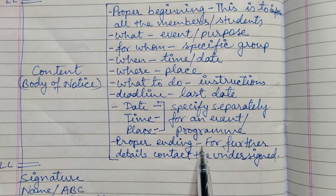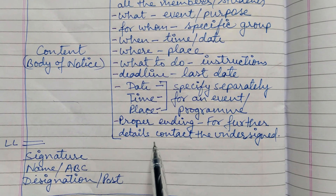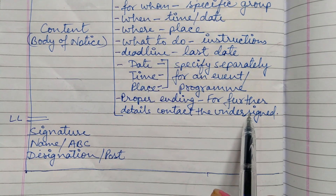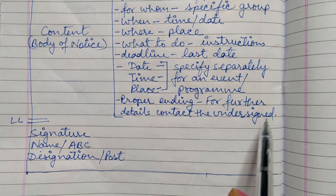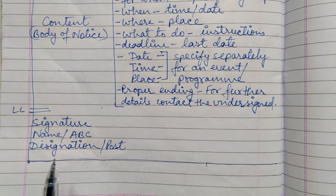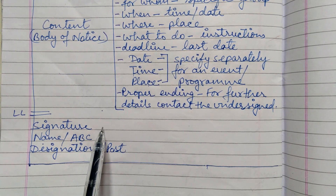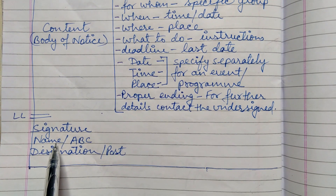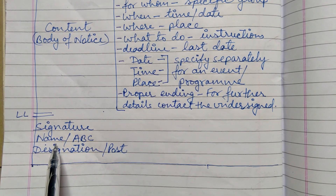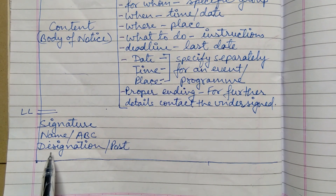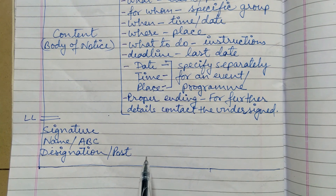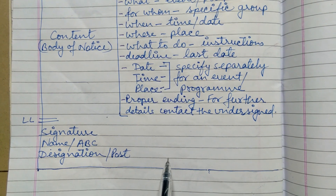The notice should be ended properly, for example: 'For further details contact the undersigned.' We can also mention the name, designation of the person, or phone number. After that we will leave a line to make the notice look neat. Then we will write the signature of the person issuing the notice, the name of the person — if the name is given in the question we mention it, otherwise we write ABC — and the designation or post, for example head boy, head girl, secretary, or director of any organization.